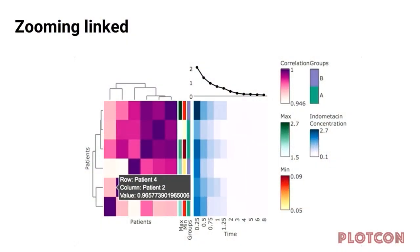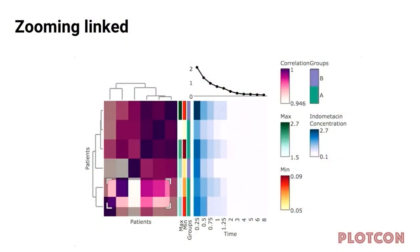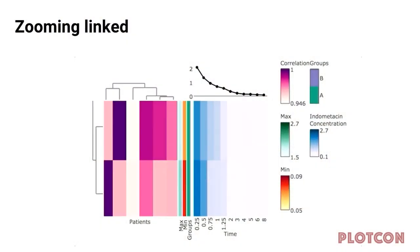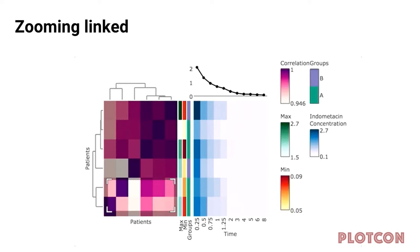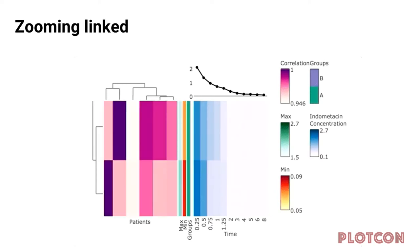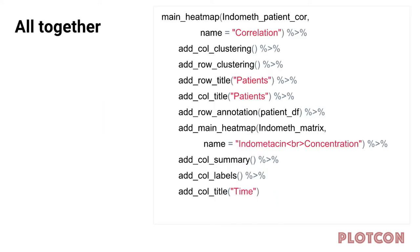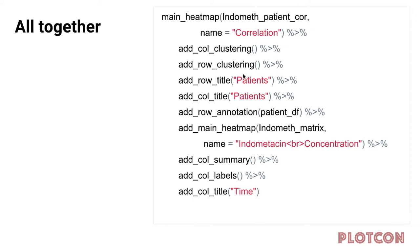There's additional stuff like maybe a summary of the data along the top or some additional labels, all of these things getting added on iteratively through the call to a new function. To highlight the zooming: you pick a particular region and zoom in, and you'll notice that all the things aligned horizontally will zoom in together.